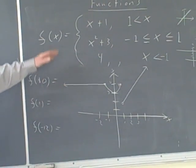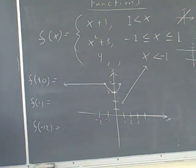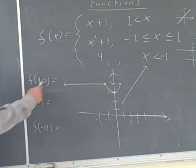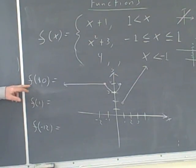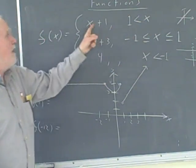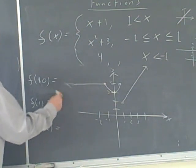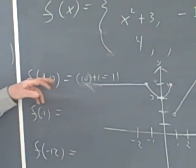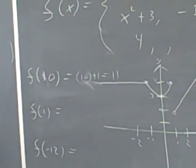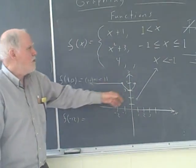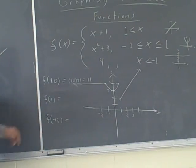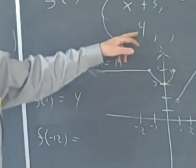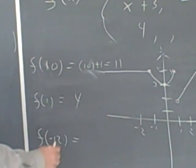In real life, rarely can we describe something with just one function — we often have to describe it with several, with the domain cut into pieces. Now I can evaluate a few function values. What's f(10)? When x is greater than or equal to 1, I use x plus 1, so f(10) equals 10 plus 1, which equals 11. What's f(1)? I use x squared plus 3 because that piece includes 1, so I get 4. And f(negative 12)? When x is less than negative 1, the function is the constant 4, so it's 4.